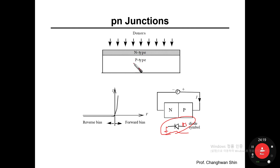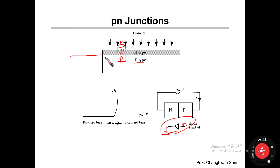To fabricate a PN junction diode, for a given P-type silicon substrate, we inject donor atoms into the P-type silicon substrate to form an N region on the surface, giving us the PN junction diode. On top of the N-type region, we deposit metal. To deliver the voltage signal into the P-type semiconductor, we make an MS ohmic contact.